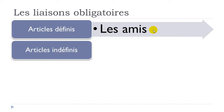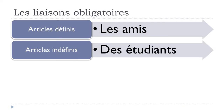Second possibility: les articles indéfinis. In English we say 'a', but in French we have the difference between masculine, feminine, and plural — un, une, des. I took the plural form 'des', ending with S. Then 'étudiant' (student) starts with a vowel, so you should make the connection: des étudiants.